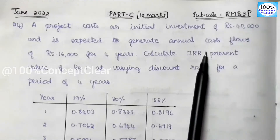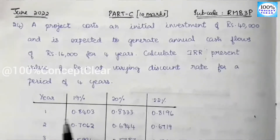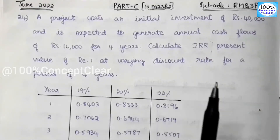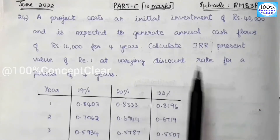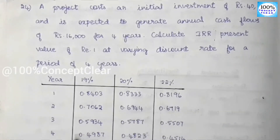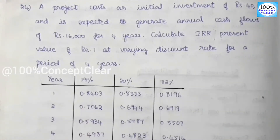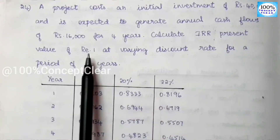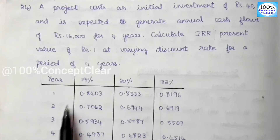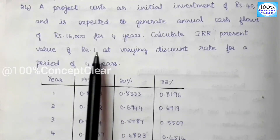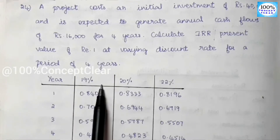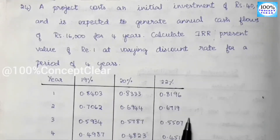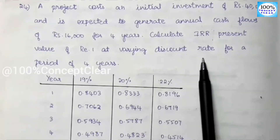If we refer to the book, we will get the rate. In the exam, there is a book to refer. That is why we refer the rate to get the information. The rate is for Rs.1 over 4 years — that is 19% in a year and 20% in a year. We will get the discount rate and that is the PV factor.